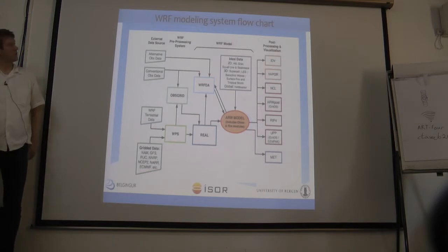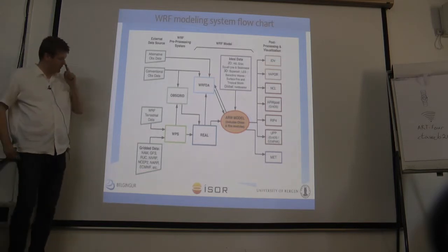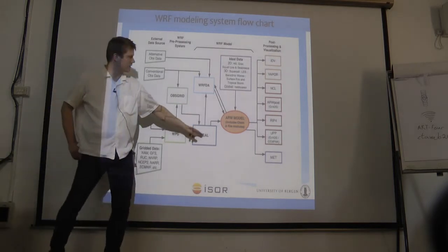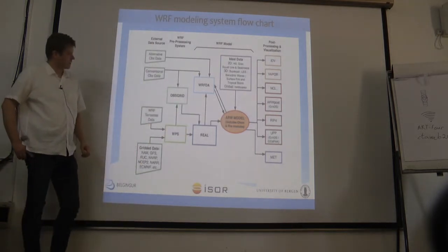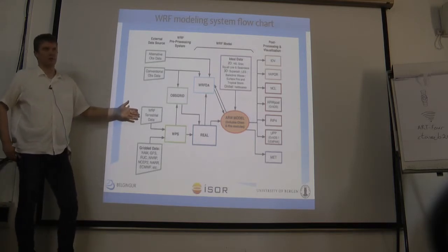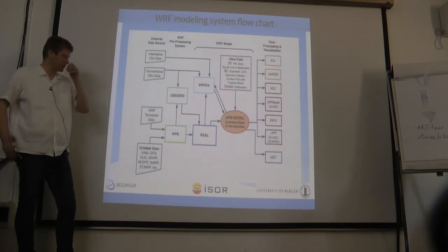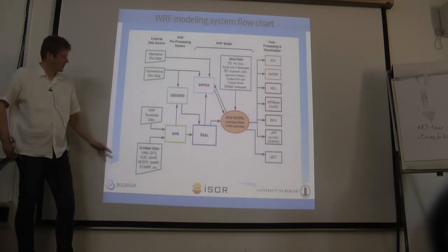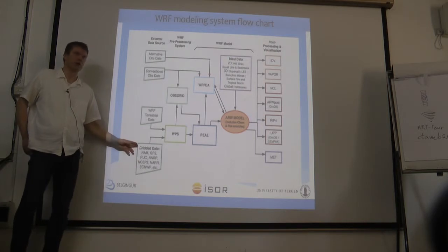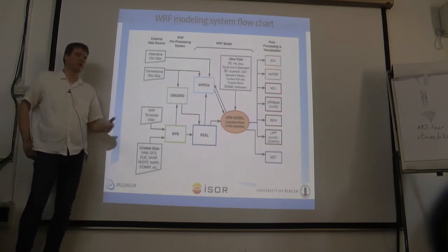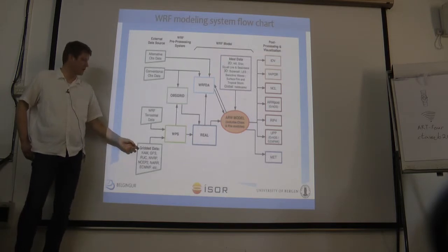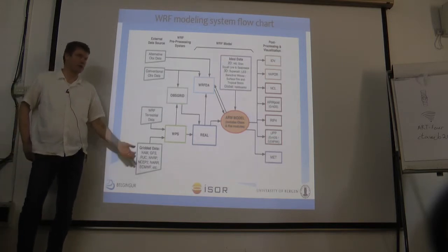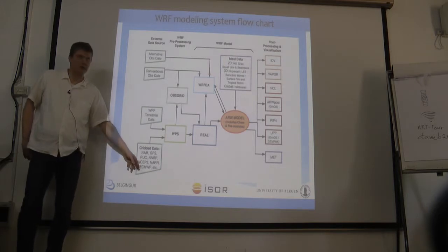This is a schematic flowchart of the WRF model. I'll be focusing on the lower part — the preprocessing system and running the model. To do that, you need some static data to represent the terrain, topography, and soil properties of the area you want to simulate. Then you need input from a global model, either as a forecast — from ECMWF or the GFS — or reanalysis data from the MERRA dataset from NASA or the ERA-Interim from ECMWF.